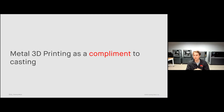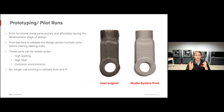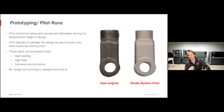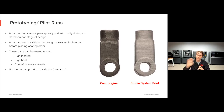Let's start with metal 3D printing as a complement to casting, starting with prototyping and pilot runs. Prototyping is probably the most common application for 3D printing, especially in plastic — but now we're not just prototyping for form and fit. We can actually functionally test our components. We can print functional metal parts during the development stage to validate our design before placing our casting order — testing parts under high loading, high heat, and corrosion environments to understand how our geometry is going to perform. We refer to this as functional prototyping.